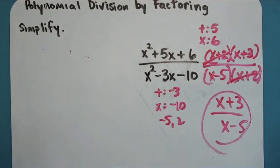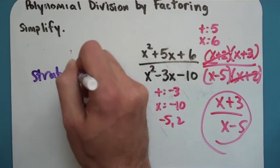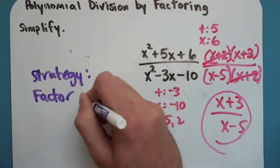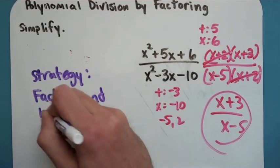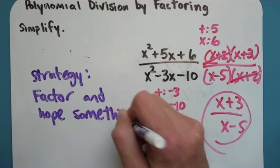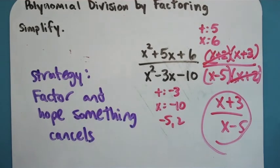So our basic strategy for these problems is going to be to factor and hope something cancels. Obviously, it's not always going to work. We're going to learn a method that will always work for division. But for right now, if you're asked to divide two polynomials, that's what we're going to do. We're going to factor it and hope that something's the same so we can slash it out.